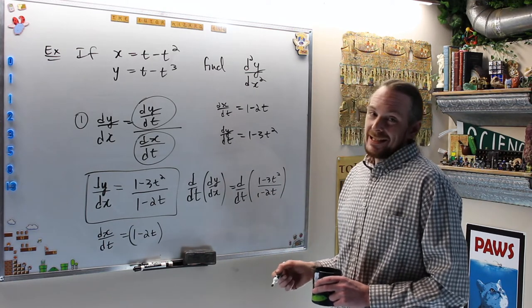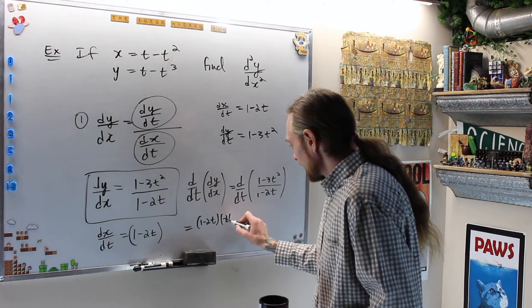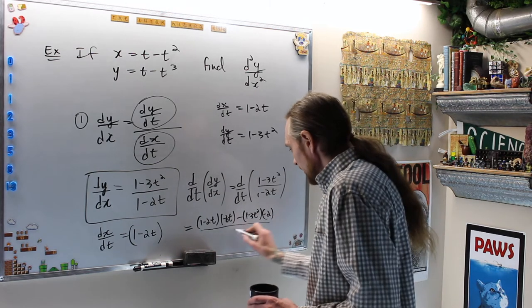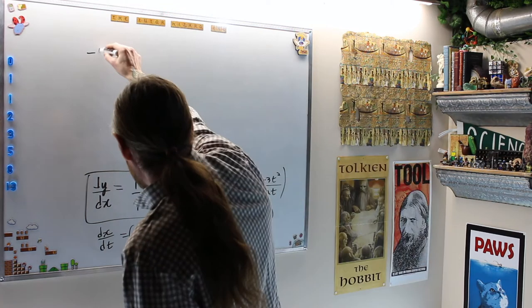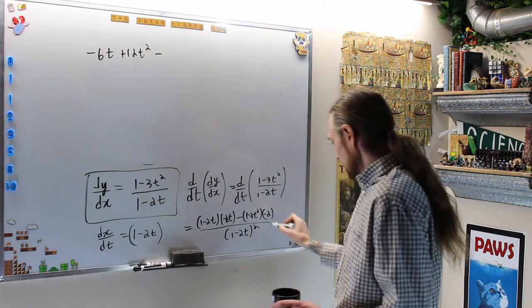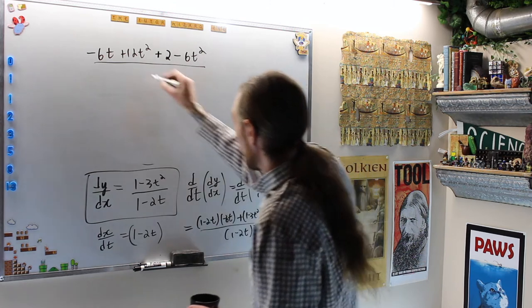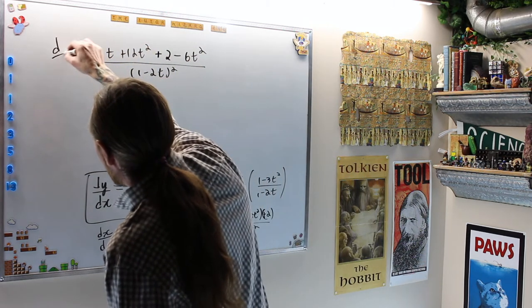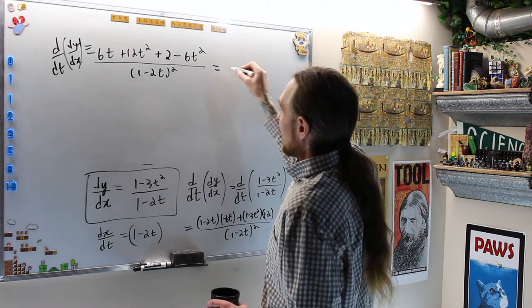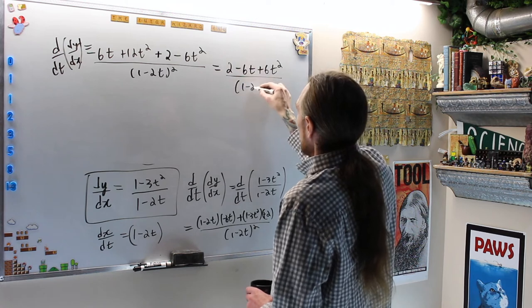And now that I have it in the problem, now you can see that is the derivative with respect to t of 1 minus 3t² over 1 minus 2t. Quotient rule, bottom d top minus top d bottom over bottom squared. I'm going to do it that way, bottom, 1 minus 2t, d top, negative 6t, minus top, 1 minus 3t², d bottom, negative 2 over 1 minus 2t squared, which is, what? Negative 6t plus 12t², plus 2 minus 6t², that seems right, over 1 minus 2t squared.